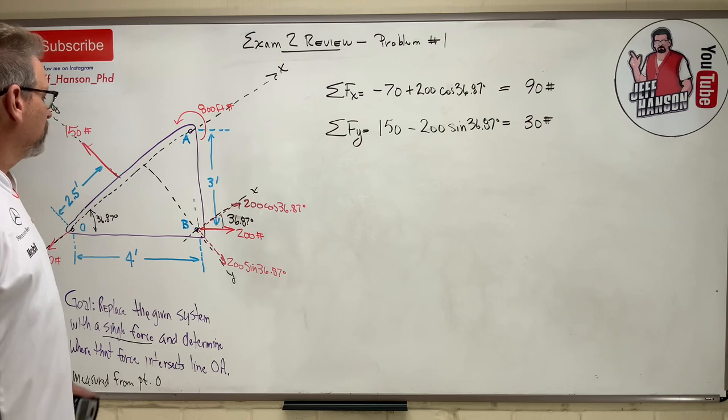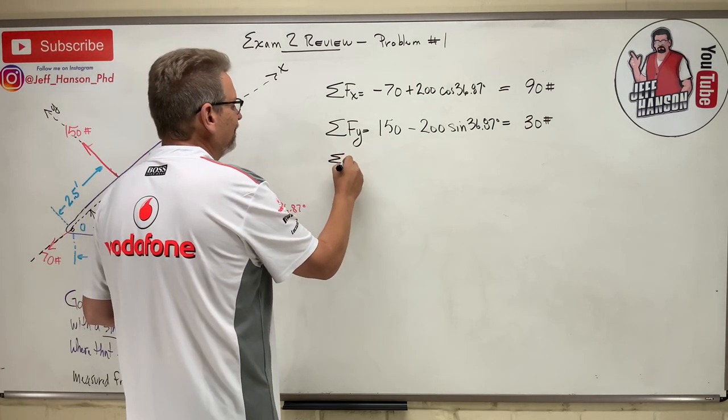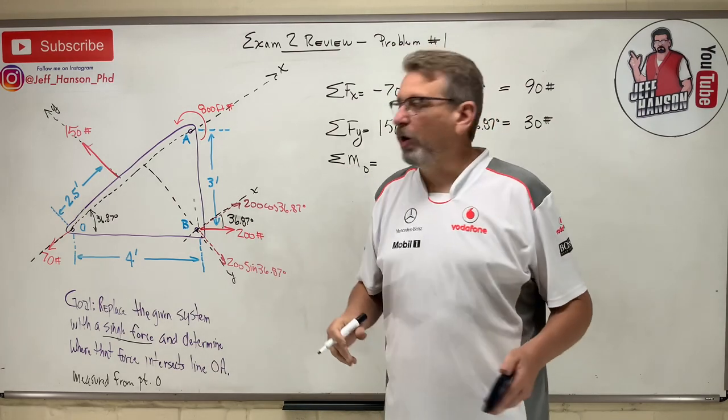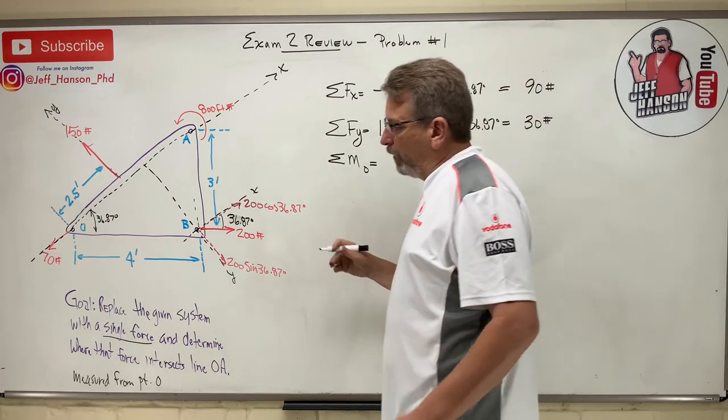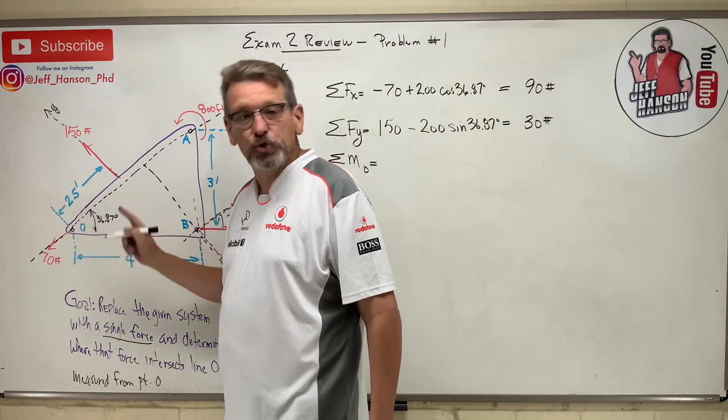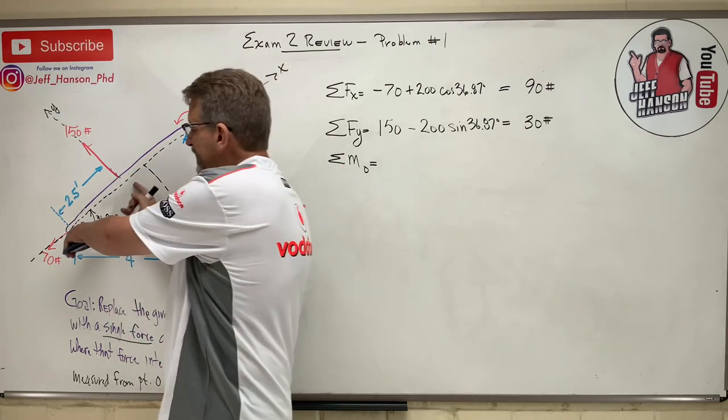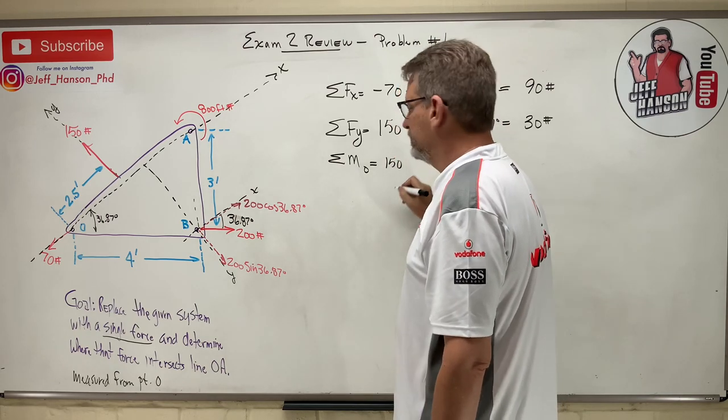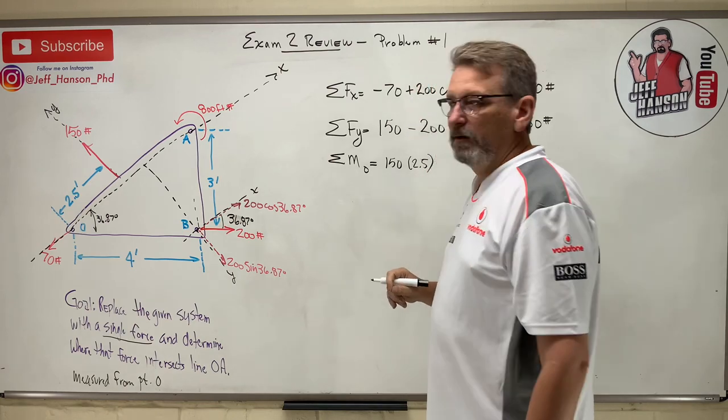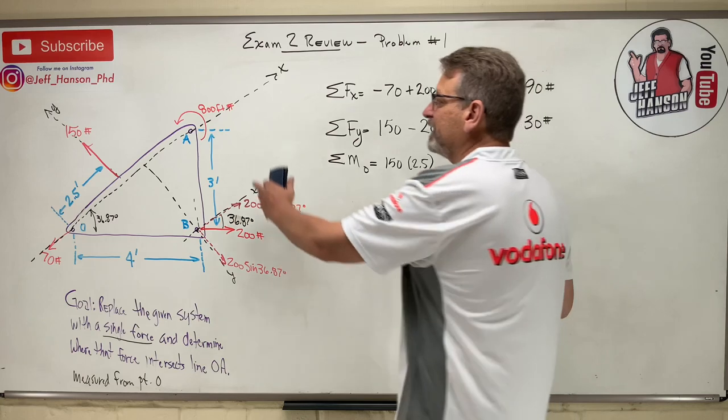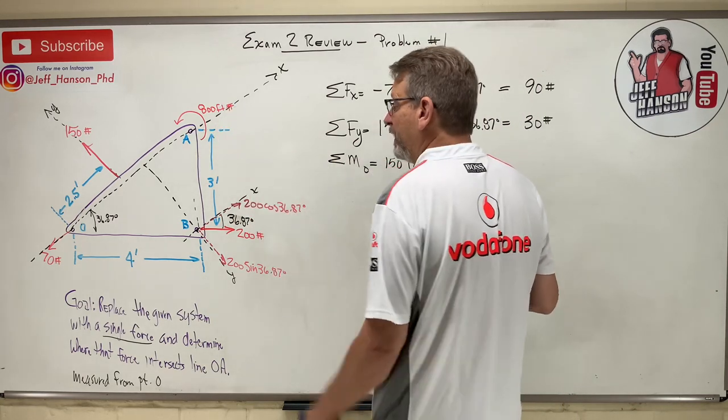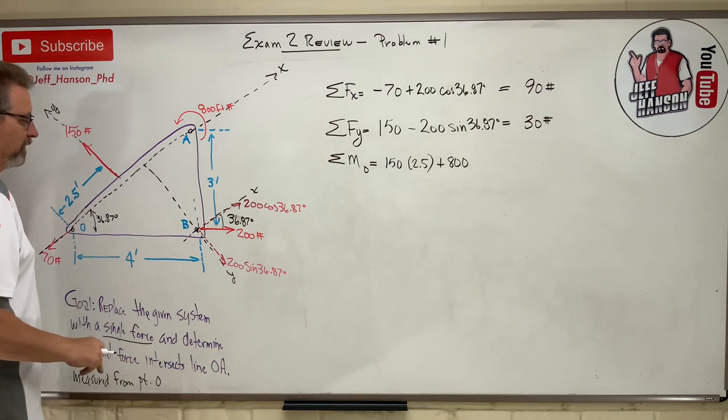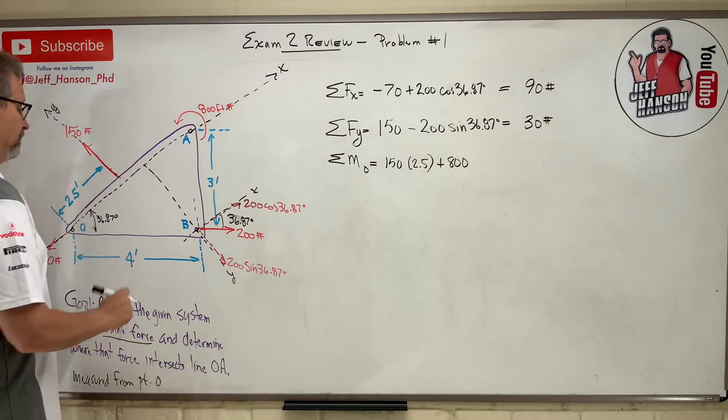What else do I have? The next step: sum the moments about the point of interest. Let's make it point O. Since we're measuring from point O, let's take the moment at point O. What happens at point O? The 70 gets knocked out - it goes through point O. The 150 rotates me, that's positive 150 times how far away, 2.5. You see why I tilted that? That's easy, yeah. Then I've got this 800 burrito force up here, which is in the positive direction, so just plus 800. And then I've got to do the moment of these two cats down here.